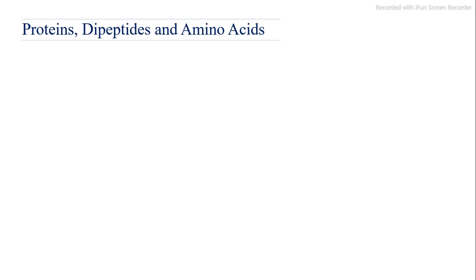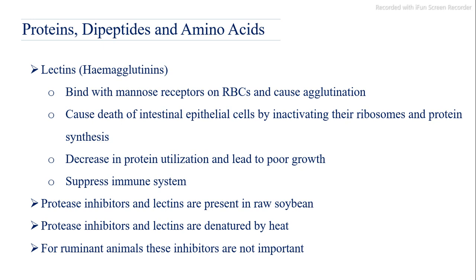Lectins and hemagglutinins bind with mannose receptors on red blood cells and cause agglutination. They cause death of intestinal epithelial cells by inactivating their ribosomes and protein synthesis, decrease protein utilization leading to poor growth, and suppress the immune system. Protease inhibitors and lectins are present in raw soybeans and are denatured by heat treatment. For ruminant animals, these inhibitors are not considered important.